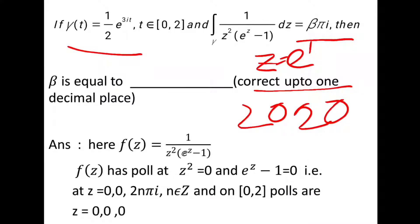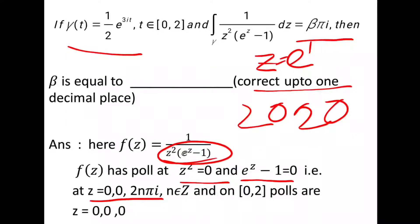We know that the function has a pole if we put the denominator equal to zero, that is z² = 0 and e^z - 1 = 0. That is z = 0, 0, and 2nπi, n ∈ Z.